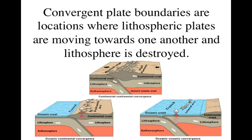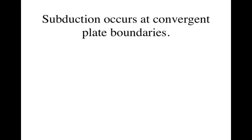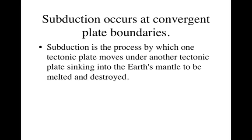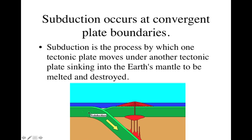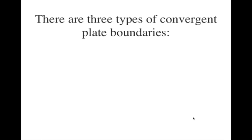We have actually three different types of convergent plate boundaries. How the lithosphere gets destroyed is called subduction. Subduction is the process by which one tectonic plate — and it's always an oceanic plate — moves under another tectonic plate, sinks into the Earth's mantle, and gets melted and destroyed. Here are two plates, and the oceanic plate gets subducted down. Once it gets down into the mantle it starts to melt, because magma is just melted rock. And oftentimes we get volcanic activity as some of that magma bubbles up.